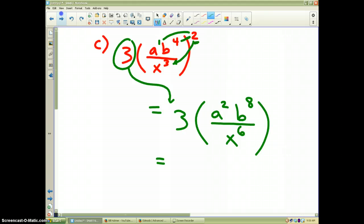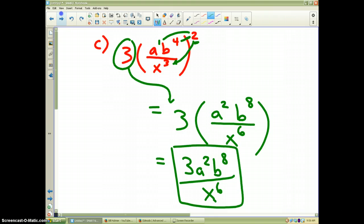Now, you could leave it that way. Or, if you just wanted to put the 3 and attach it to the numerator, 3a squared, B to the eighth, divided by x to the sixth. That would probably even be a better way to write the problem and the answer without parentheses. So, I hope that demonstrates power to a power for you and how to do these particular problems.